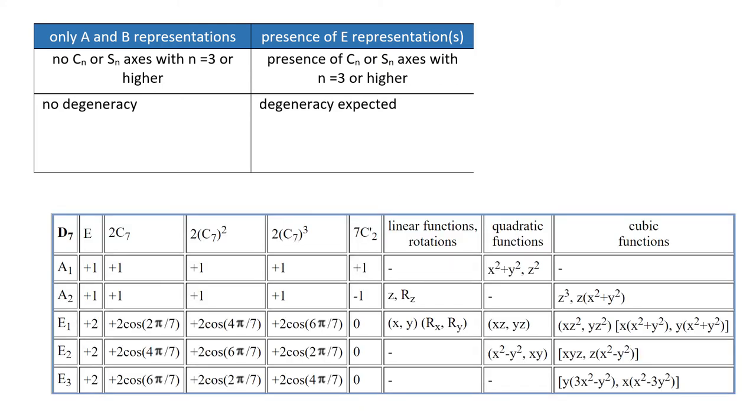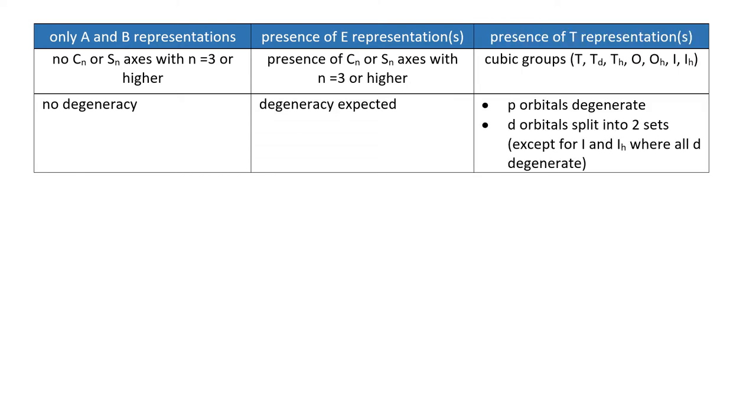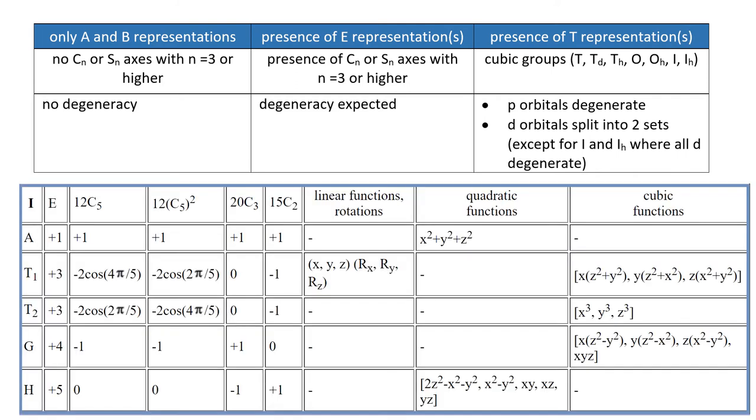For instance, in D7 group, we have three E representations, and E3 does not describe any p or d orbitals. We also know that T representations are present only in cubic groups. In these groups, p orbitals are always degenerate and d orbitals split into two sets, except for i and ih groups where all d orbitals are under one representation, so they have the same energy.